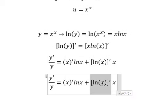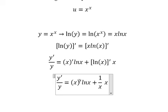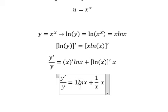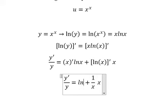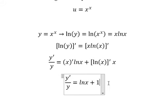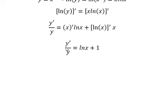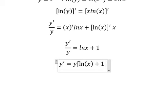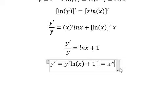This one equals one over x, this one equals number one, so we just write it as ln x. x, this one equals number one. Next we multiply by y for both sides. y equals x to the power of x.